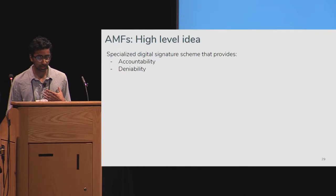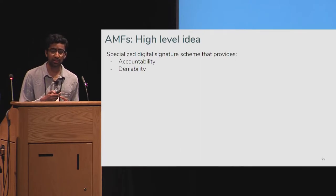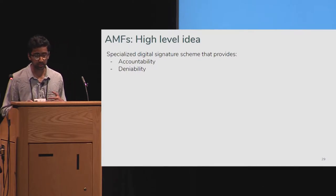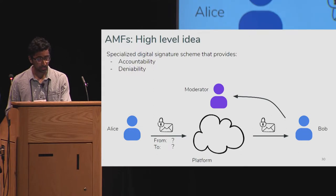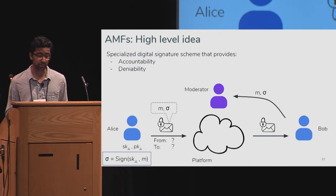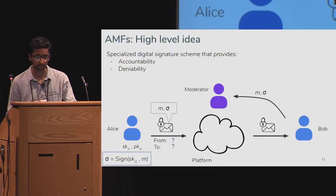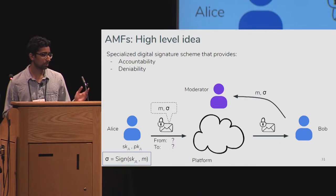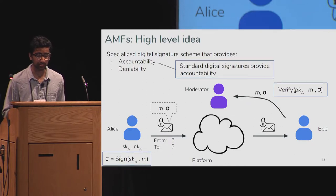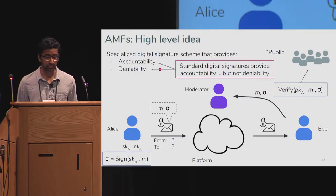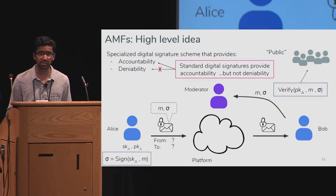At a high level, our solution — asymmetric message franking — is a specialized digital signature scheme that reintroduces sender identity binding using public key identities, while simultaneously achieving the accountability and deniability goals of our content moderation setting. To send a message, Alice signs the message using her secret key and then encrypts the message and signature under the end-to-end encryption symmetric key. Our message franking protocol is decoupled from the end-to-end encryption algorithm. Bob can then choose to report the message by sending the message and signature to the moderator. Accountability is easily satisfied using standard digital signatures, but this same verification can be run by anyone, so Alice's messages have no deniability.